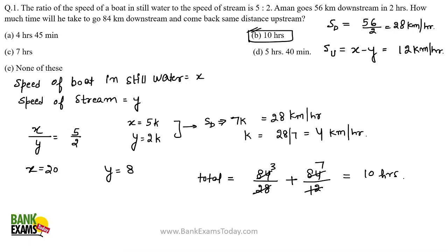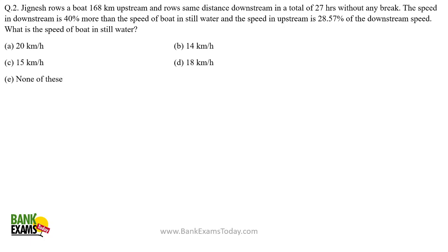Let's move to the next question. Jignesh rows about 168 kilometers upstream and the same distance downstream in a total of 27 hours without any break. So: (168/su) + (168/sd) = 27 hours.